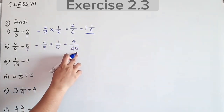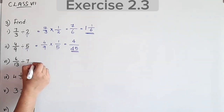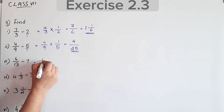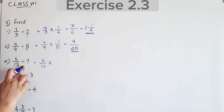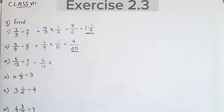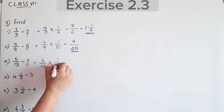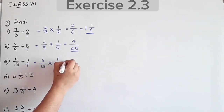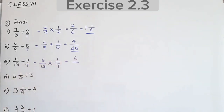Next question: 6/13 divided by 7. Write 7 as 7/1, reciprocal is 1/7. 6/13 into 1/7 gives 6 by 91. This is a proper fraction.